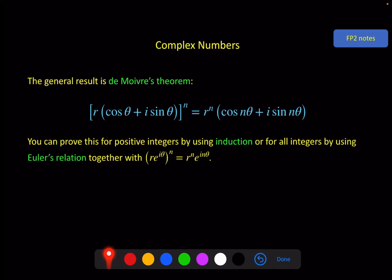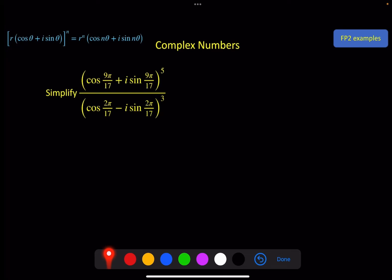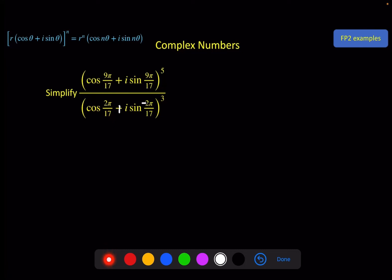So why is this useful? First, it makes simplifying expressions really easy. For example, when r equals 1, we can just bring the power in as a multiplier in the argument. We need to be careful with a minus sign — this format requires a plus. We use the identity that −sinθ equals sin(−θ), so we put a minus inside the sine. And since cos(−θ) equals cosθ, we don't need to change the cosine. Now we can bring each power in as a multiplier in its respective argument.